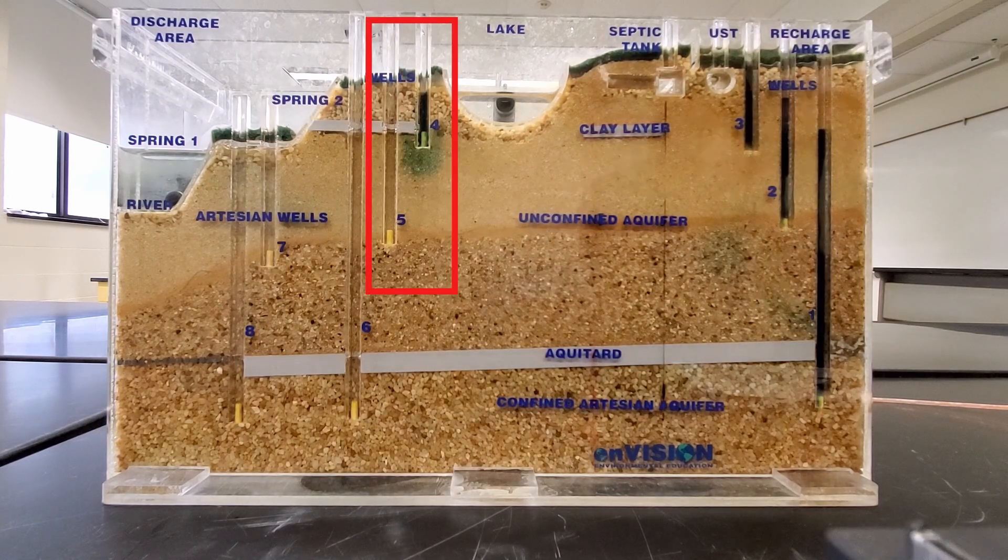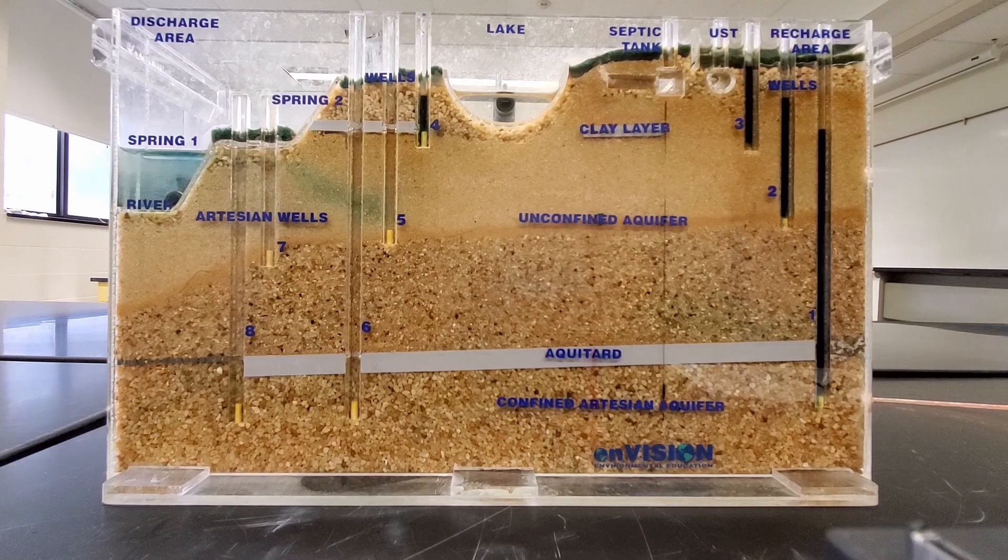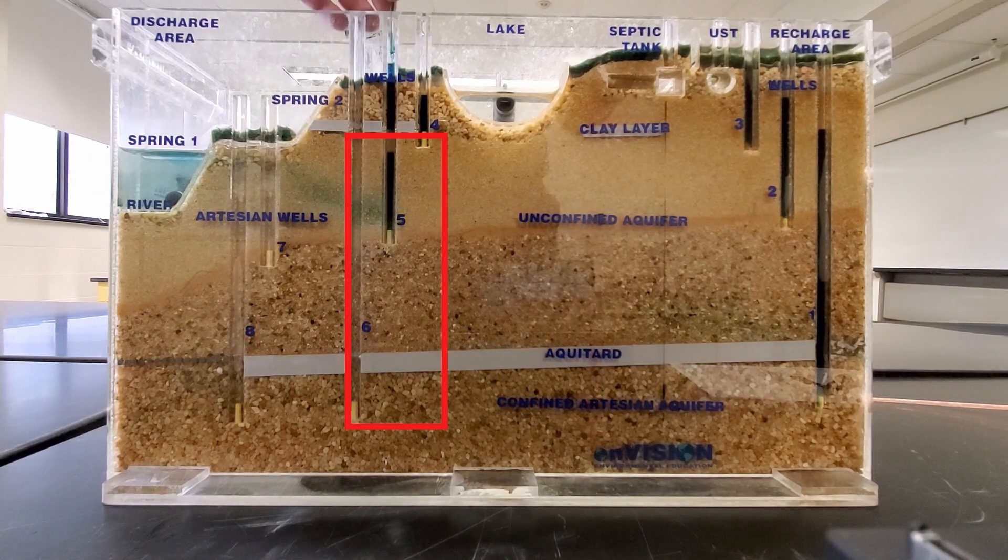The dye added to the 4th and 5th well also spread throughout the wells, though the dye from well 5 does not travel below the aquitard.